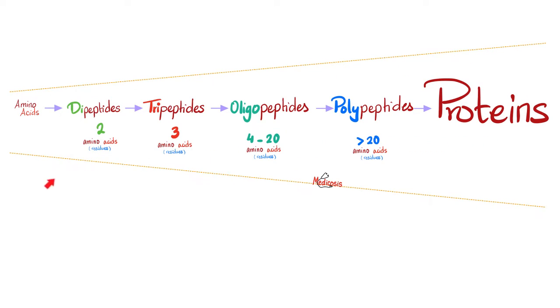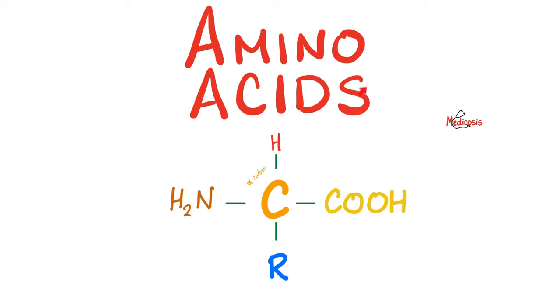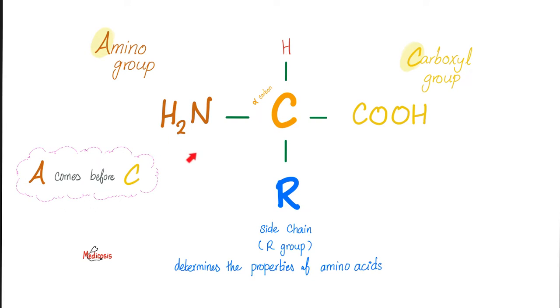If I want to go the other way and break down amino acids — why do we call them amino acids? Because they have an amino group and a carboxylic acid group. Amino acid.